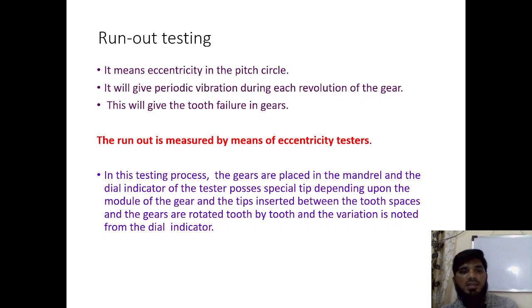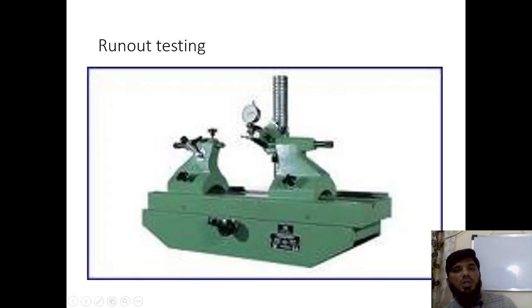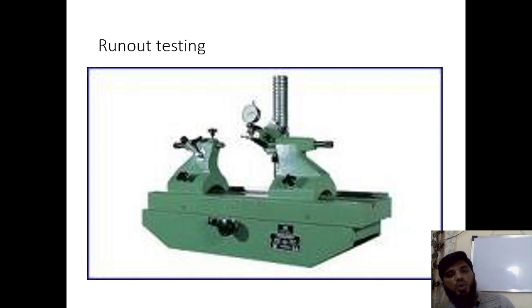Runout is measured by means of eccentricity testers. In this testing procedure, the gear is placed on a mandrel connected to a dial gauge. Similar to a lathe machine setup, there are two mandrels — one fixed and one movable. The gear is fixed between them and rotated. If it is not eccentric, there are no deflections in the dial gauge. If it is eccentric, the gear vibrates unevenly and the dial gauge plunger moves up and down, giving positive or negative deflections.